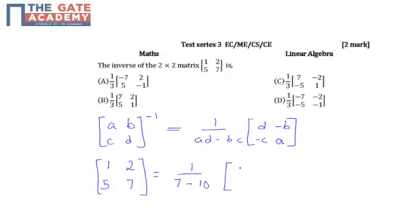Now interchanging this we would get 7 and 1. Now changing the sign we would get minus 2 and minus 5. So this is nothing but, if we look closely, this will give me minus 3. Since in all the options the coefficient is 1 by 3, what we will do is take the minus sign inside. So what we get is 1 by 3 times: